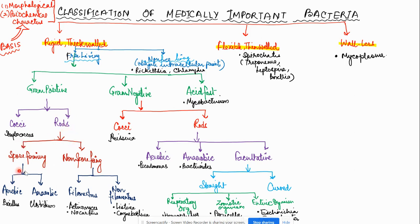Gram-positive rods can be divided into spore-forming and non-spore-forming. Spore-forming bacteria are aerobic or anaerobic; aerobic examples are Bacillus and anaerobic are Clostridium. Non-spore-forming filamentous forms are Actinomycetes and Nocardia, and non-spore-forming non-filamentous are Corynebacterium and Listeria.